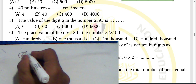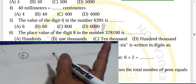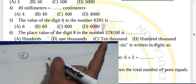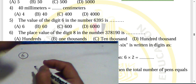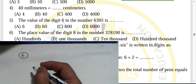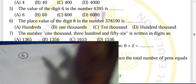Question six: the place value of digit eight in a given number. The digit eight lies in the thousands place, so its place value is one thousand — choose thousands.